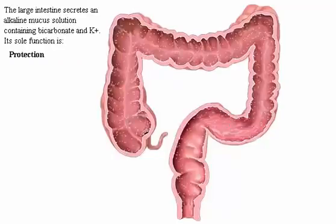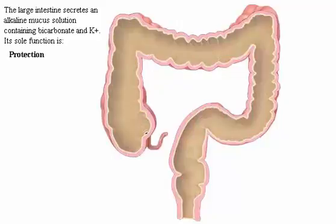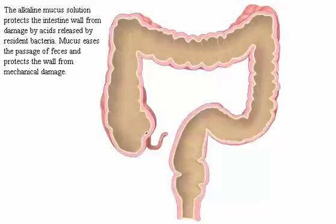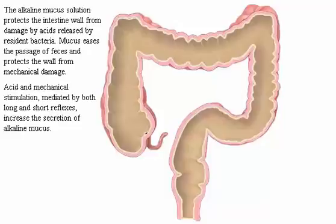The large intestine secretes an alkaline mucus solution containing bicarbonate and potassium. Its sole function is protection. The alkaline mucus solution protects the intestinal wall from damage by acids released by resident bacteria. Mucus eases the passage of feces and protects the wall from mechanical damage. Acid and mechanical stimulation, mediated by both long and short reflexes, increase the secretion of alkaline mucus.